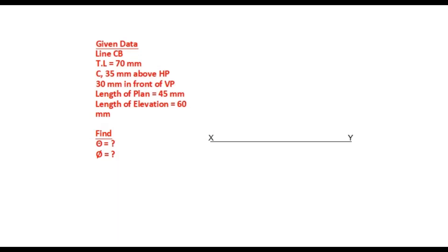Draw an XY line. Mark the elevation of end point C of the line CD 35mm above the XY line, because point C is 35mm above HP. This elevation of end point C is C dash. Now mark the plan of end point C of the line CD 30mm below the XY line, because C is 30mm in front of VP. Name it as C.